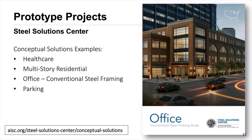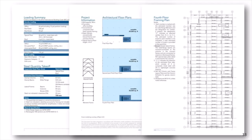One of the complementary services provided by our Steel Solutions Center is the development of conceptual solutions, which demonstrate the viability of a steel framing system for a specific building project — and we now even have the capability to do that for bridge projects. Several sample building prototypes are available on the Steel Solutions Center page, including prototypes for healthcare, multi-story residential, office buildings, and parking structures. For example, the prototype for conventional steel framing for an office building includes a loading summary, steel quantity takeoff, architectural floor plans, typical framing plans, column layouts, and frame elevations. Cover to cover, this document is only 12 pages and provides a really good overview of typical framing and project components.